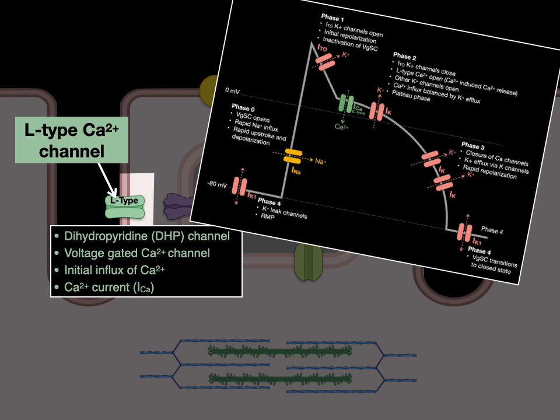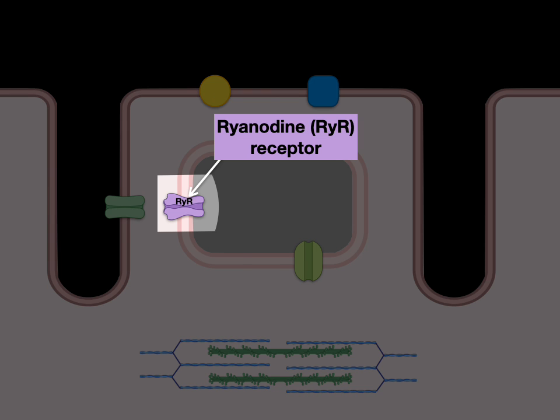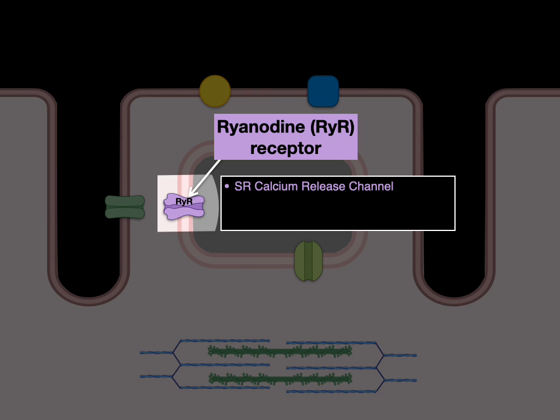Remember this contractile heart muscle cell action potential? During phase two, that's the same L-type calcium channel that we're showing. The ryanodine, or RYR, receptor is an SR calcium-release channel.